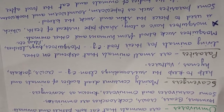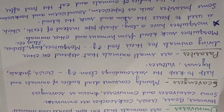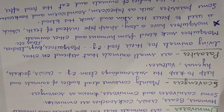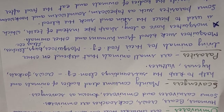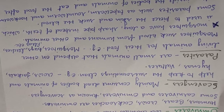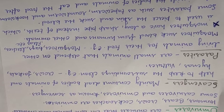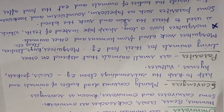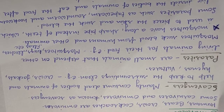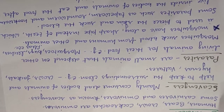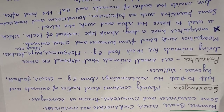Parasites are small animals that depend on other living animals for their food. Mosquito is a parasite. Mosquitoes live on blood that they suck from humans and other animals. A mosquito has a long sharp tube instead of teeth, which is used to prick the skin and suck the blood.